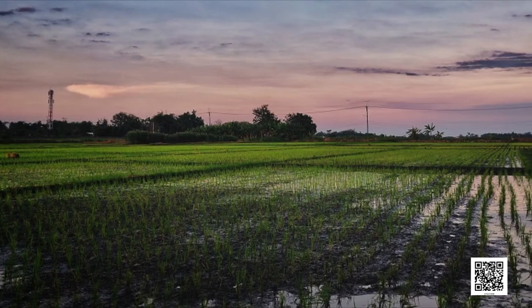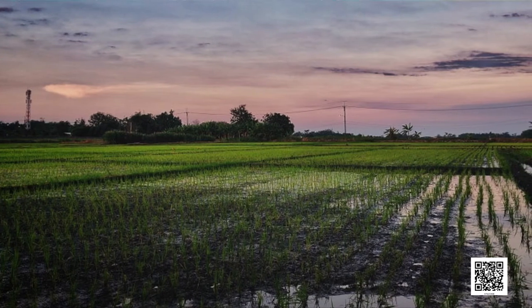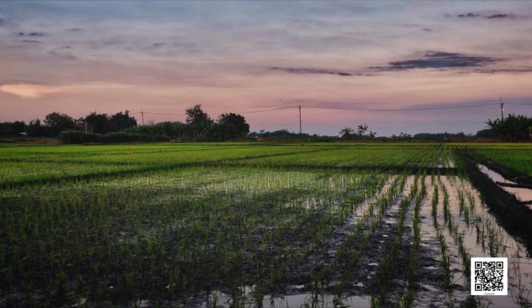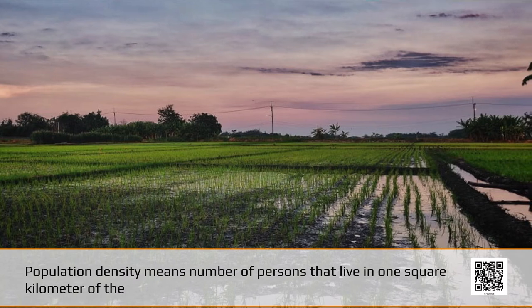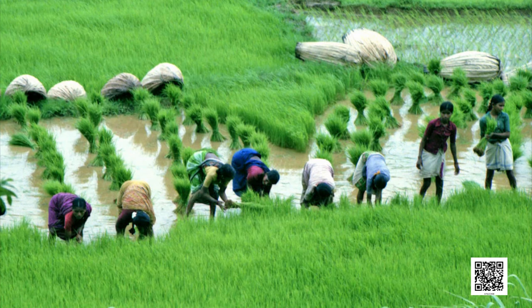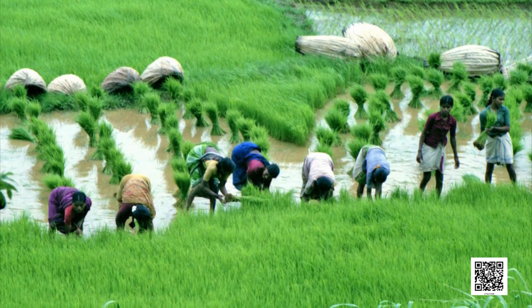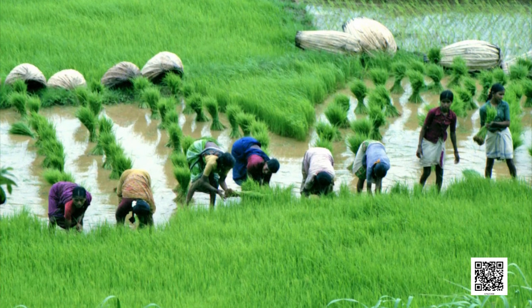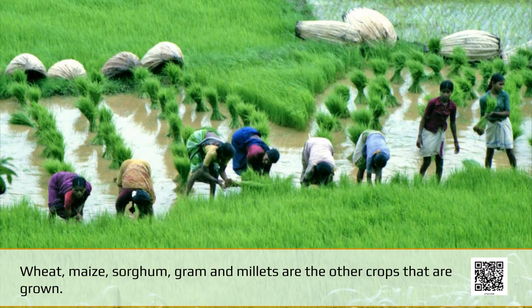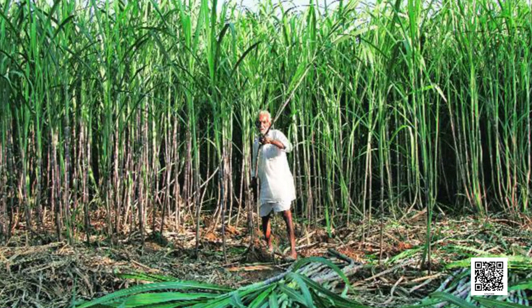The plain area provides the most suitable land for human habitation. The soil is fertile, and agriculture is the main occupation where flat land is available. Population density means the number of persons living in one square kilometer. The population density of Uttarakhand is 189, West Bengal is 1029, and Bihar is 1102. The main crop is paddy, grown where rainfall is high. Wheat, maize, sorghum, gram, and millets are other crops. Cash crops like sugarcane and jute are also grown.